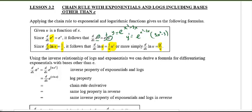This is great for e to the x and ln x, but not all exponentials are base e and not all logarithms are natural logs. We can use the inverse relationships of logs and exponentials to derive a formula for differentiating exponentials with bases other than e. So instead of e, let's use a, representing any constant. For a to the power x, we can rewrite a as e to the power of ln a, so a to the x becomes e to the power of ln a to the x. By log properties, the exponent comes down to give e to the power of x ln a.